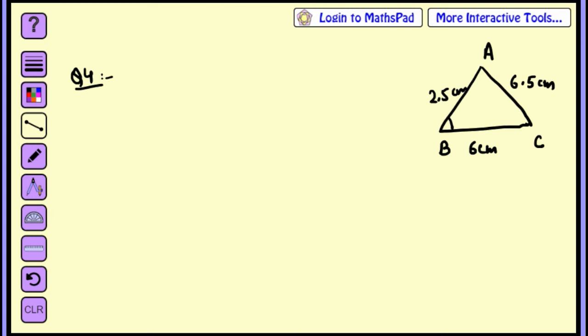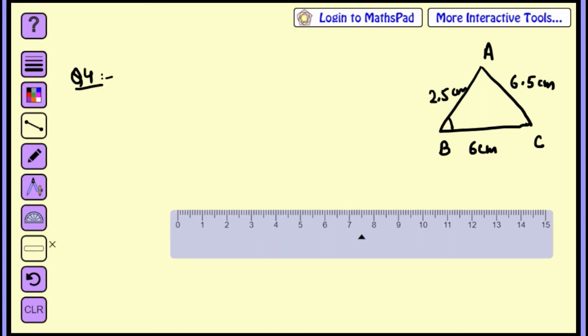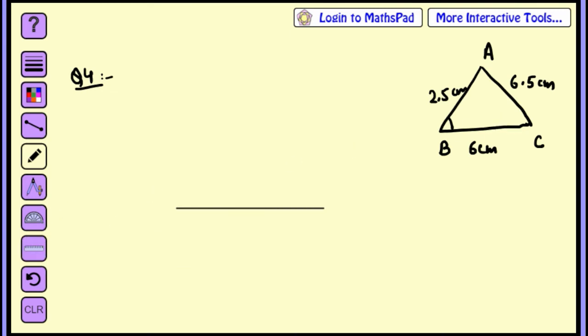So how do we do it? First of all, draw a line BC, 6cm. Draw the base. This line is 6cm. Name this line as BC and what is the length of BC? 6cm.